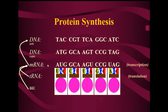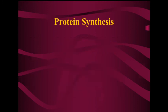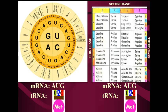Now we know the first amino acid is methionine. Using the chart — I'll put them back on the screen — see if on your paper you can determine what the next four mRNA codons code for.